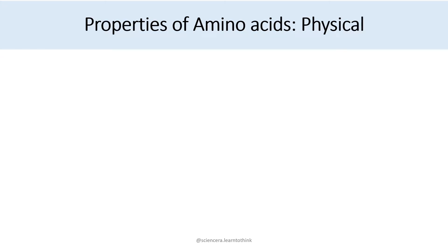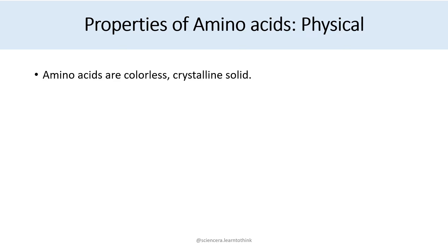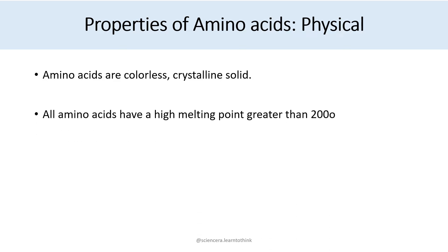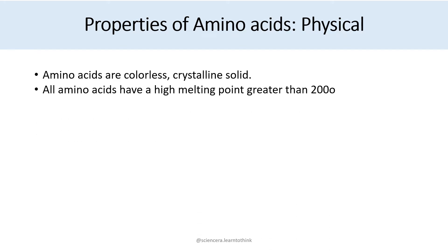Let's move on to the properties of amino acids. There are physical properties as well as chemical properties. The first physical property is that amino acids are colorless crystalline solids.